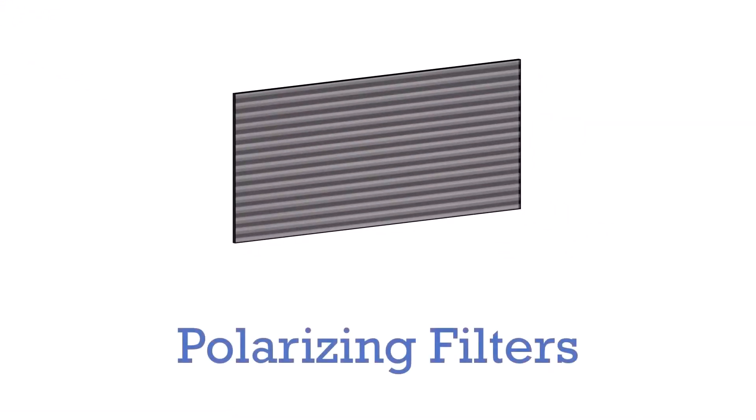For our model though, we'll be representing this light from our backlight as just these two little arrows. Displays deal with unpolarized light by using polarizing filters. A polarizing filter only allows light traveling in certain directions and orientations to pass, polarizing the resulting light.